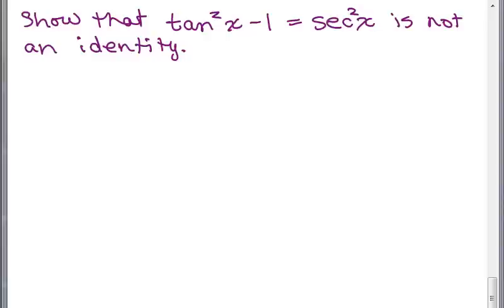Here's a little trick: if I can, I choose 0 for X, but you have to be careful that the expression is defined. If plugging in 0 is not defined, you can't do it. You could choose 30 degrees or 45 degrees. You couldn't choose π/2 because the tangent of π/2 is not defined. Since the tangent and secant are both defined at X equals 0, let's plug that in.